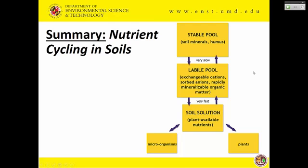Just to summarize: when we talk about nutrients, everything has to be in the soil solution for plants to take up. The soil solution is in equilibrium with what's called the labile pool — for nitrogen, that's mineralizable organic matter; for phosphorus, it's the sorption/desorption process; for potassium, it's the exchangeable pool. Then we have the stable pool: for phosphorus and potassium it's soil minerals, and for nitrogen it's humus. There is no nitrogen mineral in soil because most soil nitrogen is in soil organic matter. Plants and microorganisms can only use the soil solution pool, but everything is connected and contributes back to that pool.